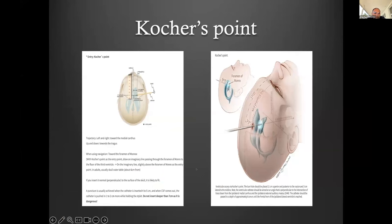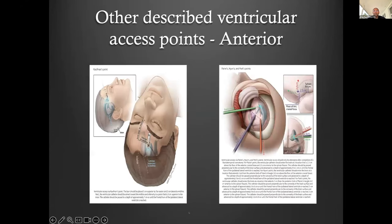Kocher's point, for placing external ventricular drains or frontal shunts, is a fairly standard junior registrar position. I'll show some of the advances and adjuncts that have been advocated for both frontal and occipital placement.